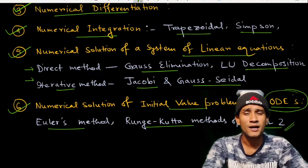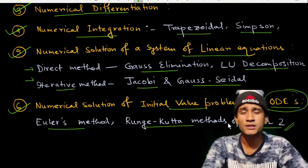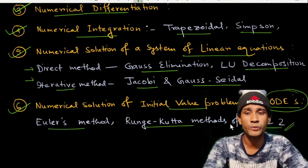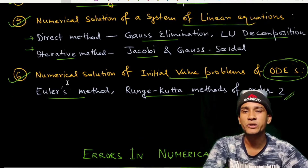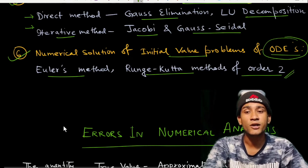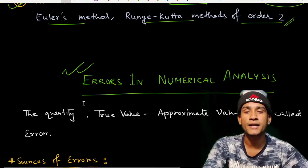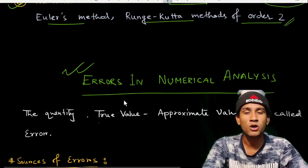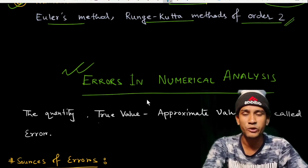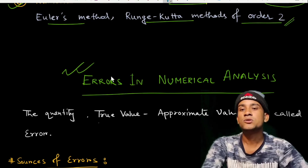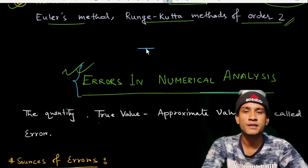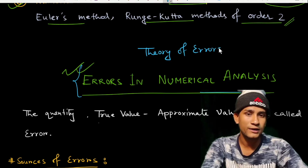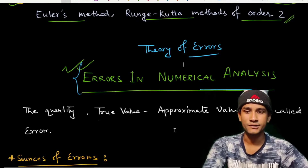For other exams like CSIR NET, the topics are within these same chapters with no extra topics beyond what is covered. This is a small topic but a very big syllabus. Before starting these topics, we need some knowledge of the error system. Today's lecture is mainly focused on errors in numerical analysis, also known as the theory of errors.